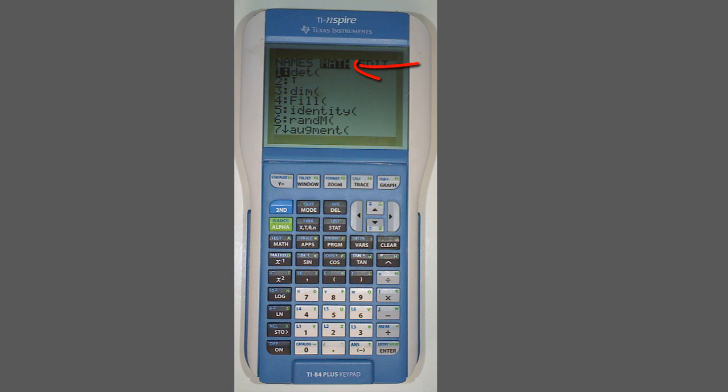Tab over to the Math menu using the arrow keys, and scroll down until you see DET, parentheses. Press Enter. DET, parentheses will appear on your display.